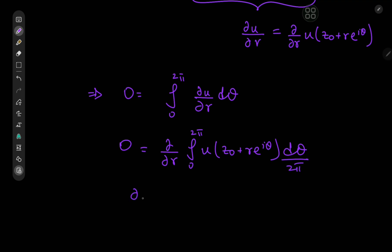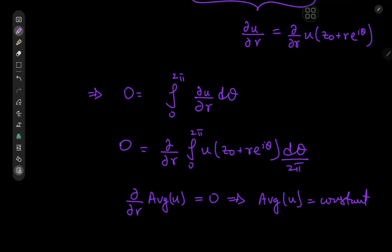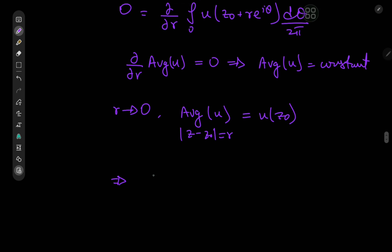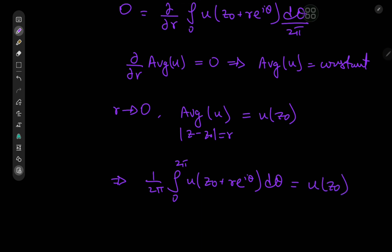Expanding with 1 over 2pi, this equation means that the partial derivative with respect to r of the average value of the function u equals 0, which implies the average value of u is a constant. Now, how do we prove that its value is in fact the value at the center? That is a very simple question, because we know in the limit as r approaches 0 the average value of u on the circle centered at z-naught of radius r equals its value at the center. And because the average value is a constant, this implies that 1 over 2pi times the integral from 0 to 2pi of u of z-naught plus r times e to the i-theta d-theta always equals the value of the function at the center itself.